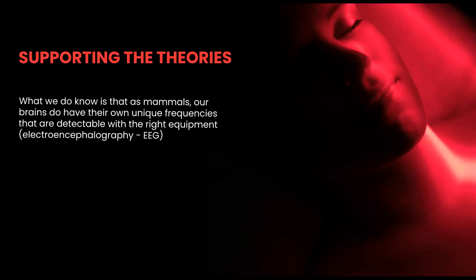As an example with brain health — as mammals, our brains have their own unique frequency that are detectable with the right equipment, known as an EEG machine. When directing specific wavelengths of light at specific frequencies, researchers can see in real time changes occurring deep in the brain. This is very exciting for the future as more and more studies are showing positive results for Alzheimer's, dementia, Parkinson's, as well as other brain issues such as TBI, PTSD, and depression.